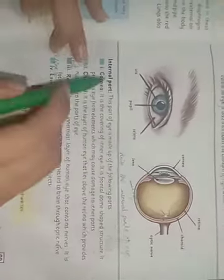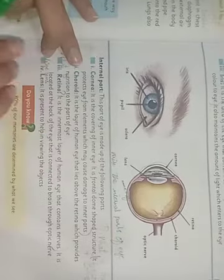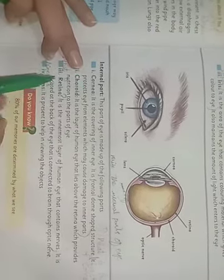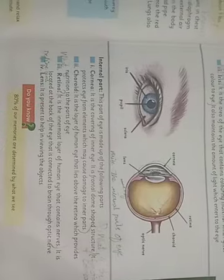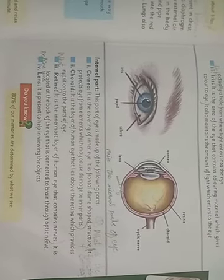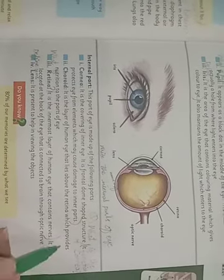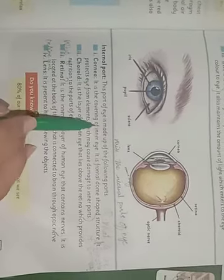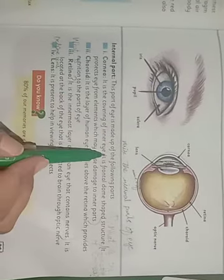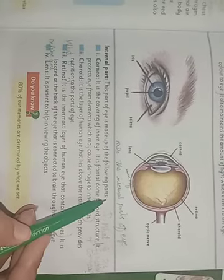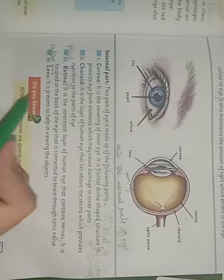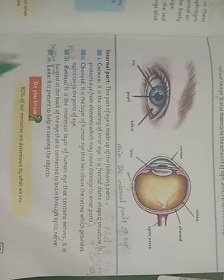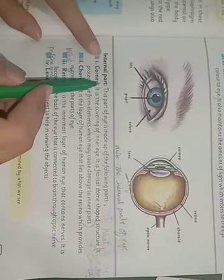Next are the internal parts. The eye has two parts, as you have listened to in the lecture. The internal parts are made up of the following parts — there are four parts in total. Now tell me: what are the internal parts and what is their function? The internal part of the eye is made up of the following parts.